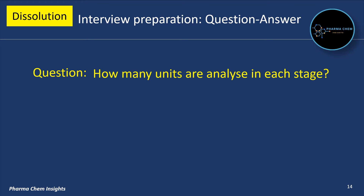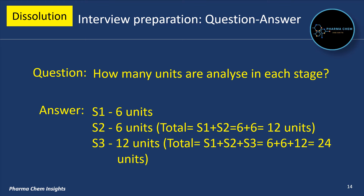How many units are analyzed in each stage? In S1, 6 units are analyzed. In S2, 6 additional units are analyzed, making a cumulative total of 12 units (S1 + S2). In S3, 12 more units are analyzed, for a cumulative total of 24 units (S1 + S2 + S3). If S1 fails, proceed to S2; if S2 fails, proceed to S3.